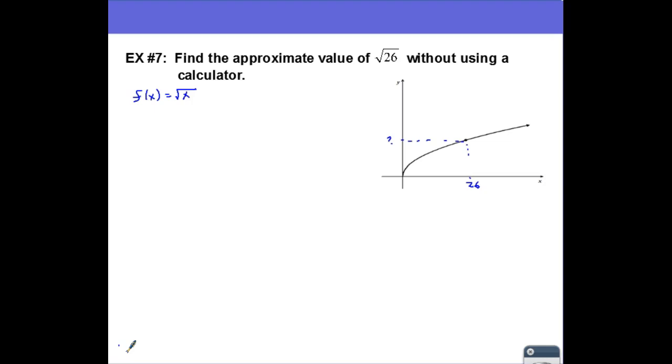So what I can do is first of all, maybe I can find some point a that would be very easy to do, since square root of 26 is an irrational number because 26 is not a perfect square. Let me find a perfect square that's very close and let me use that instead. So how about a equals 25, because I can take the square root of 25.